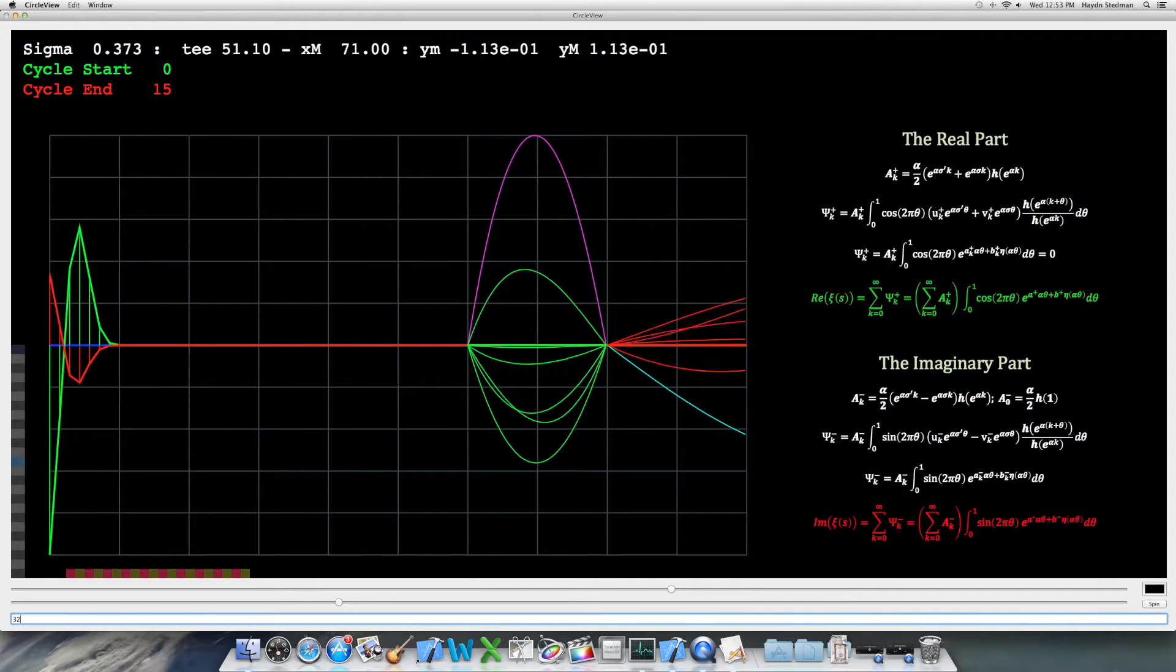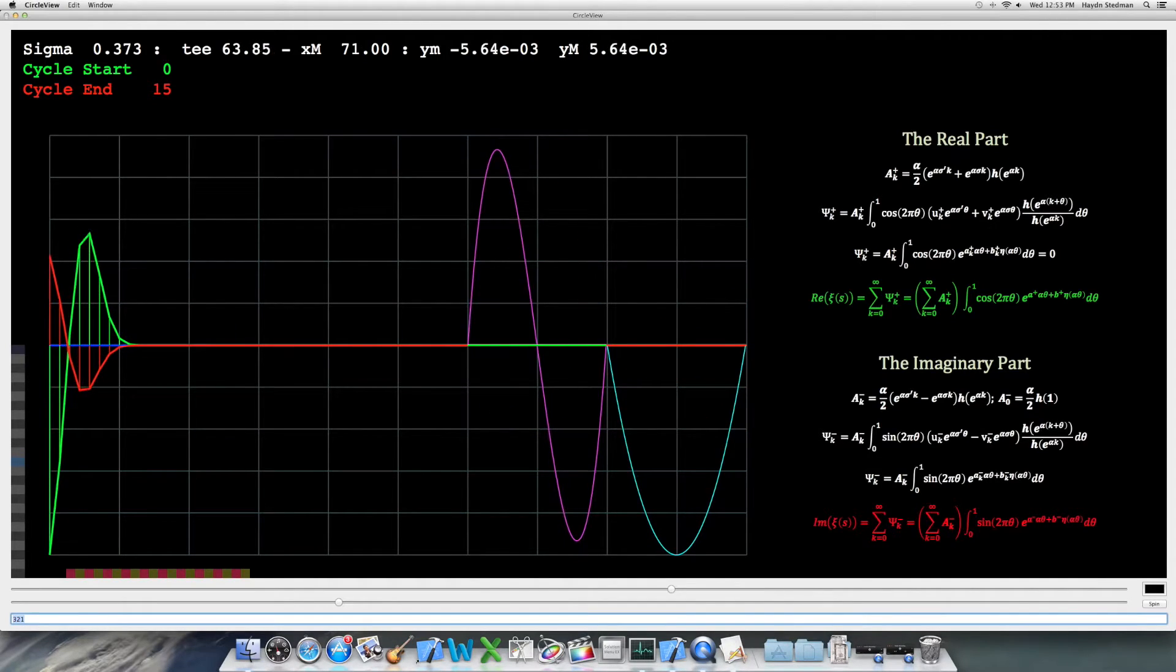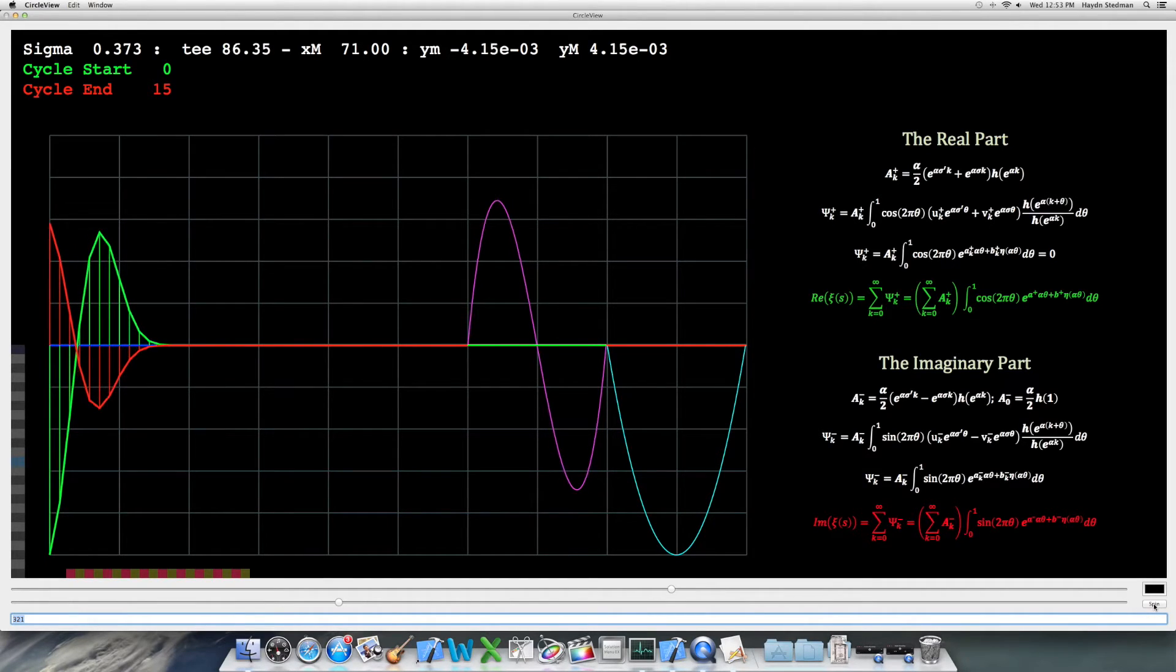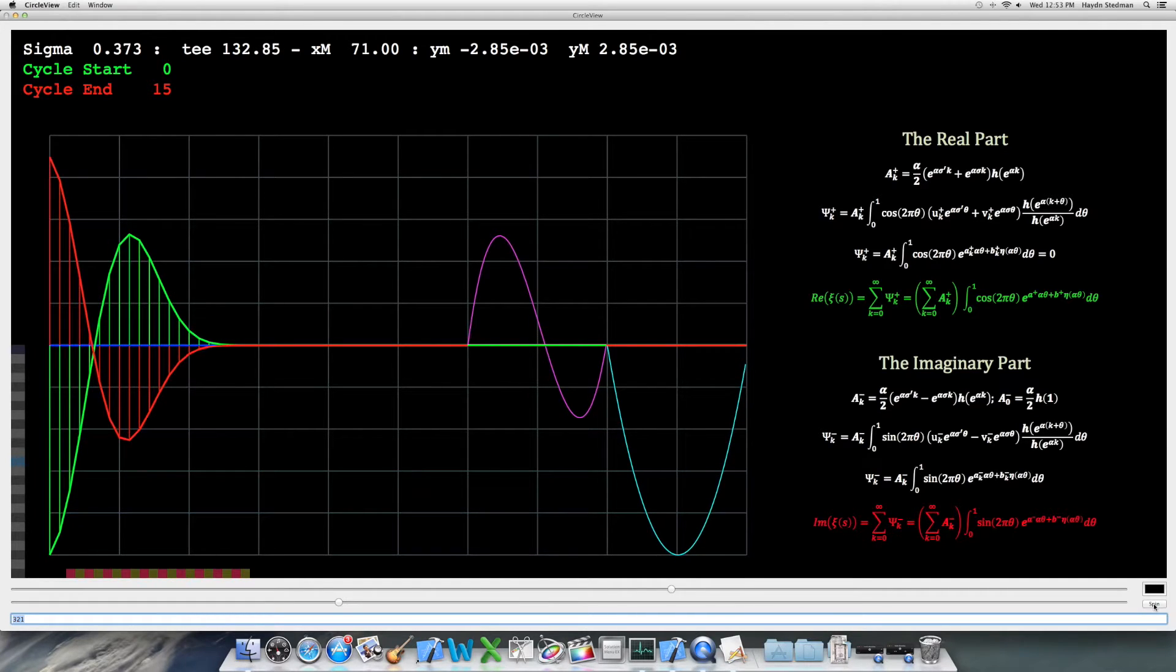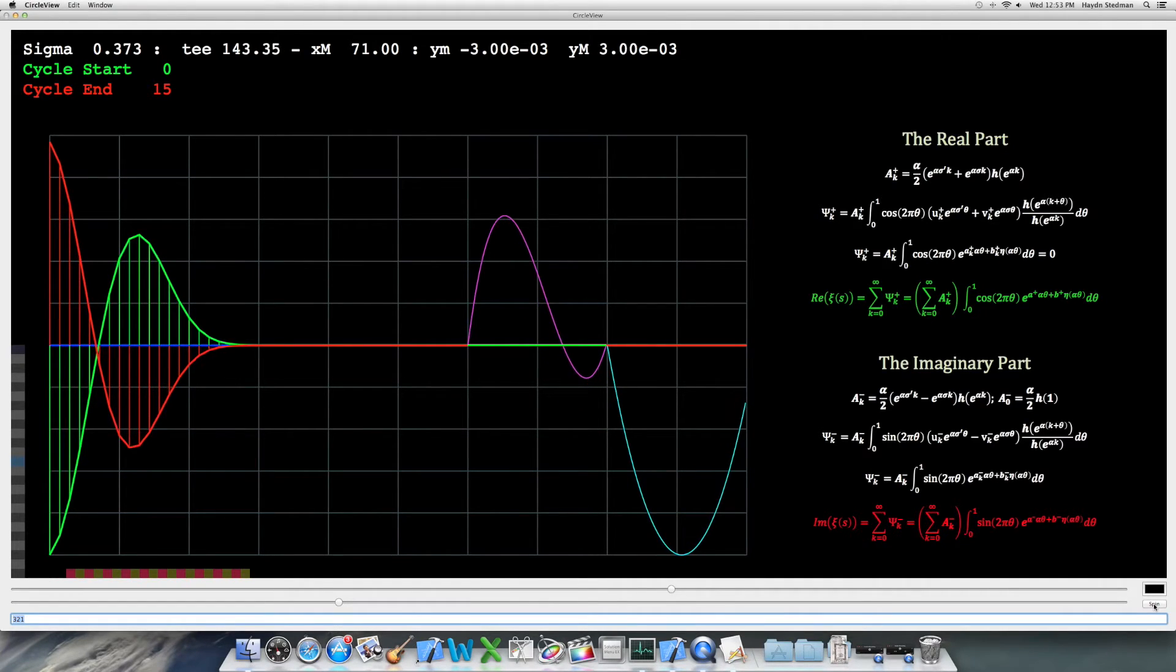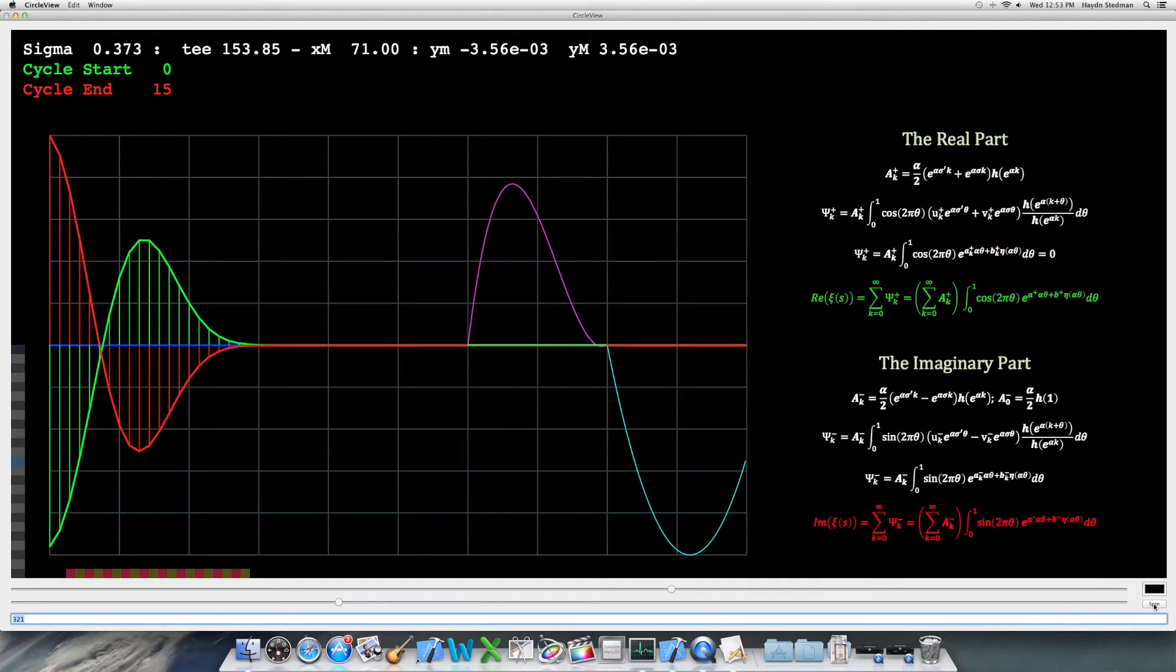Here we see the individual integrands. We look at the sum of the integrands to see the stability of shape or conformal convergence in practice. Here we continue to increase t and we'll see that the symmetry that causes the integral against cos to be zero collapses. There it goes.